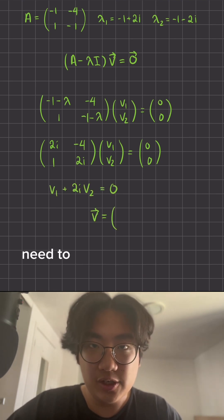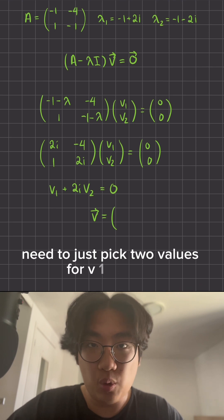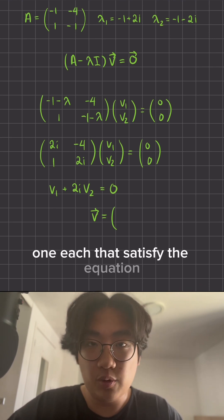Here, for simplicity, we need to pick two values for v1 and v2, one each, that satisfy the equation.